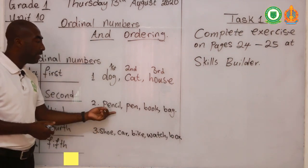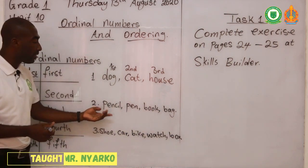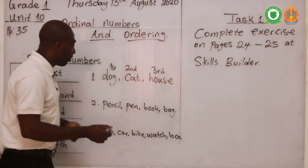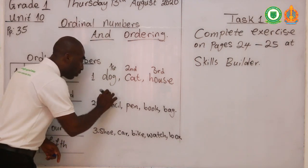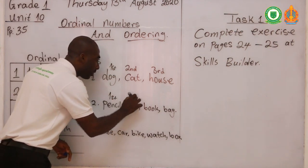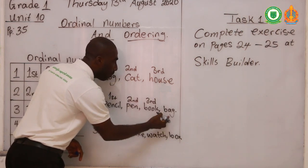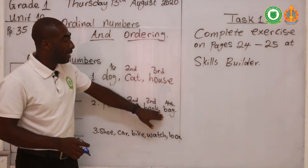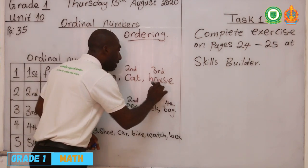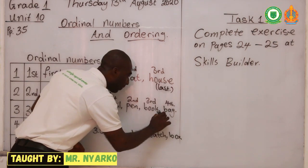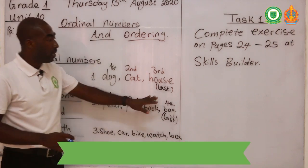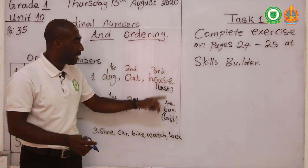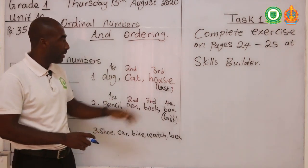Now let's look at this example: pencil, pen, book, and bag. Pencil comes first, pen comes second, book comes third, and bag comes as the fourth one. So putting the ordinal numbers on them: pencil is the first, pen is the second, book is the third, and bag is the fourth. Because bag and house are the last items on their respective lists, we can also say they are the last items, but their correct ordinal numbers are fourth and third.